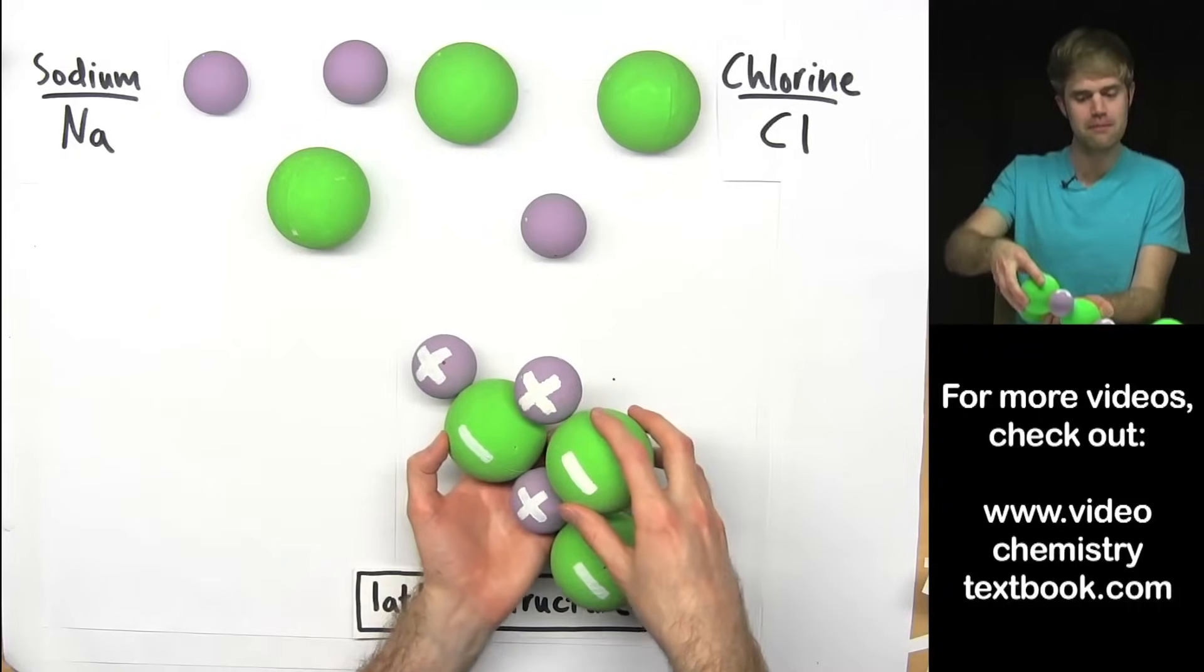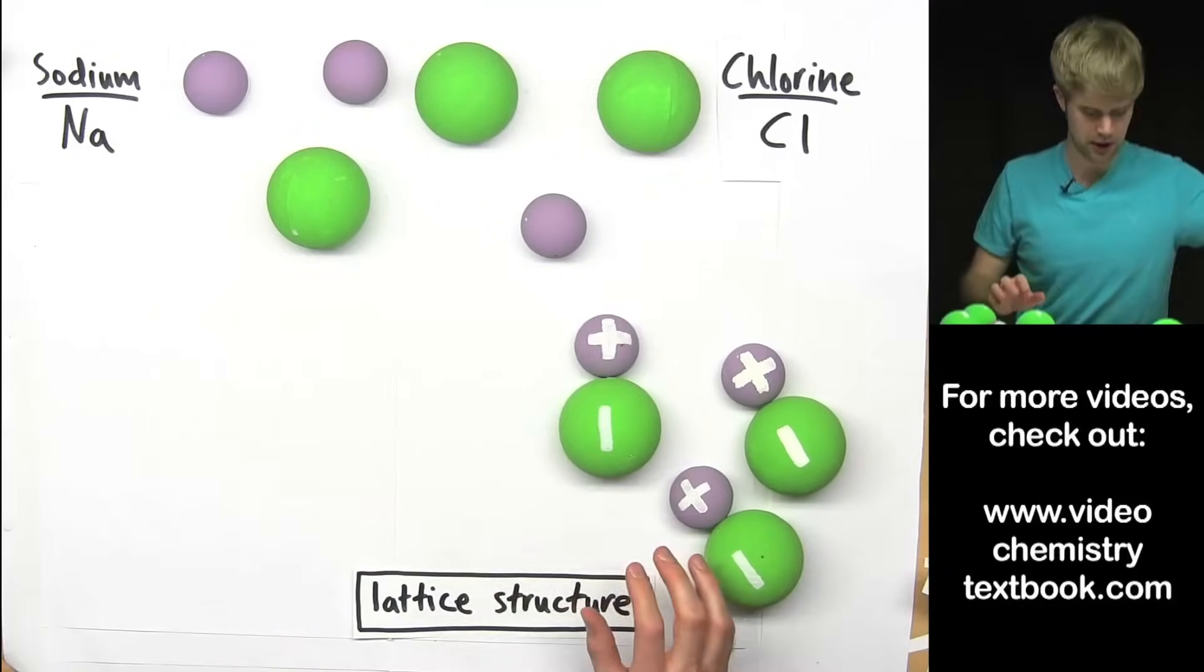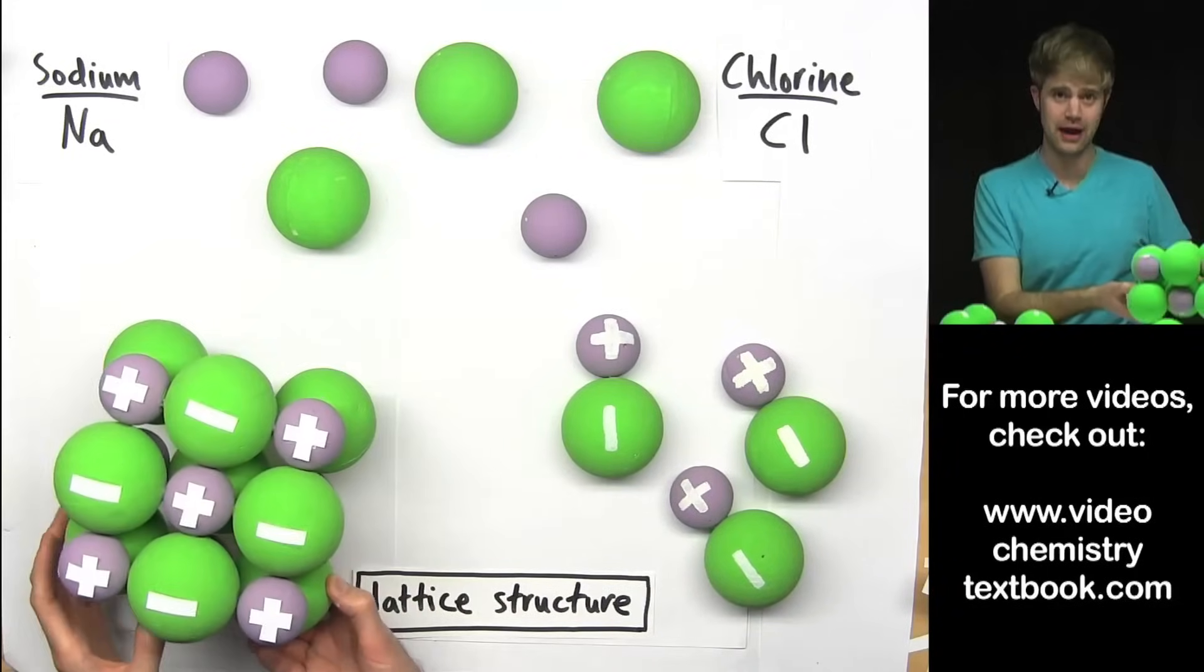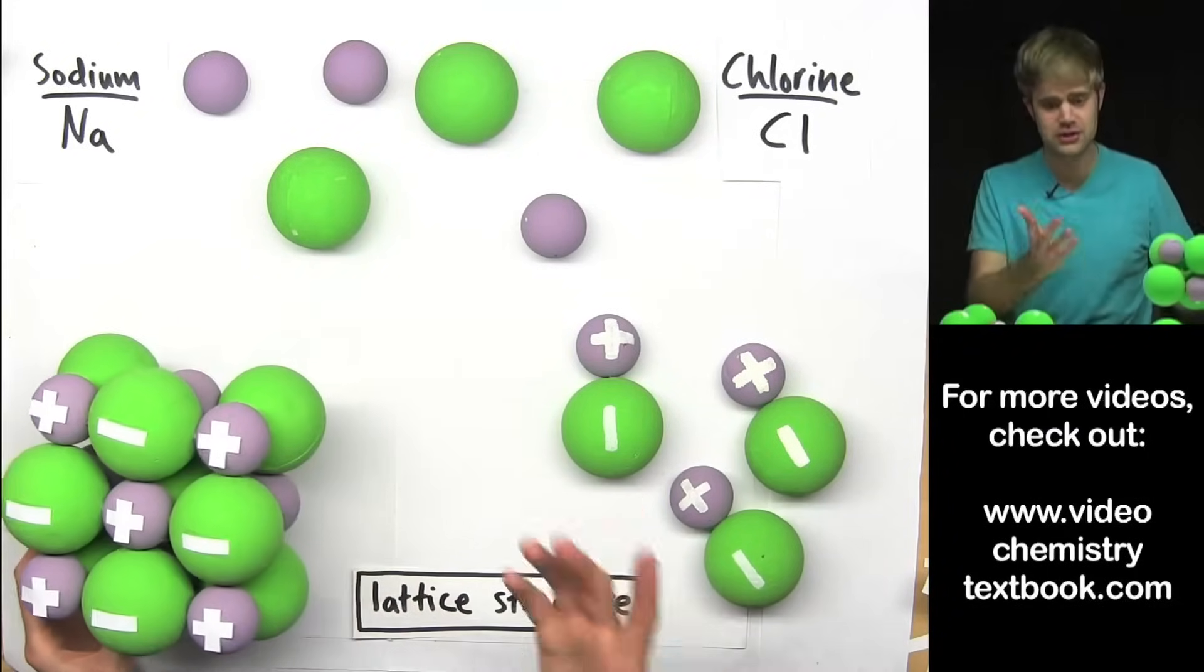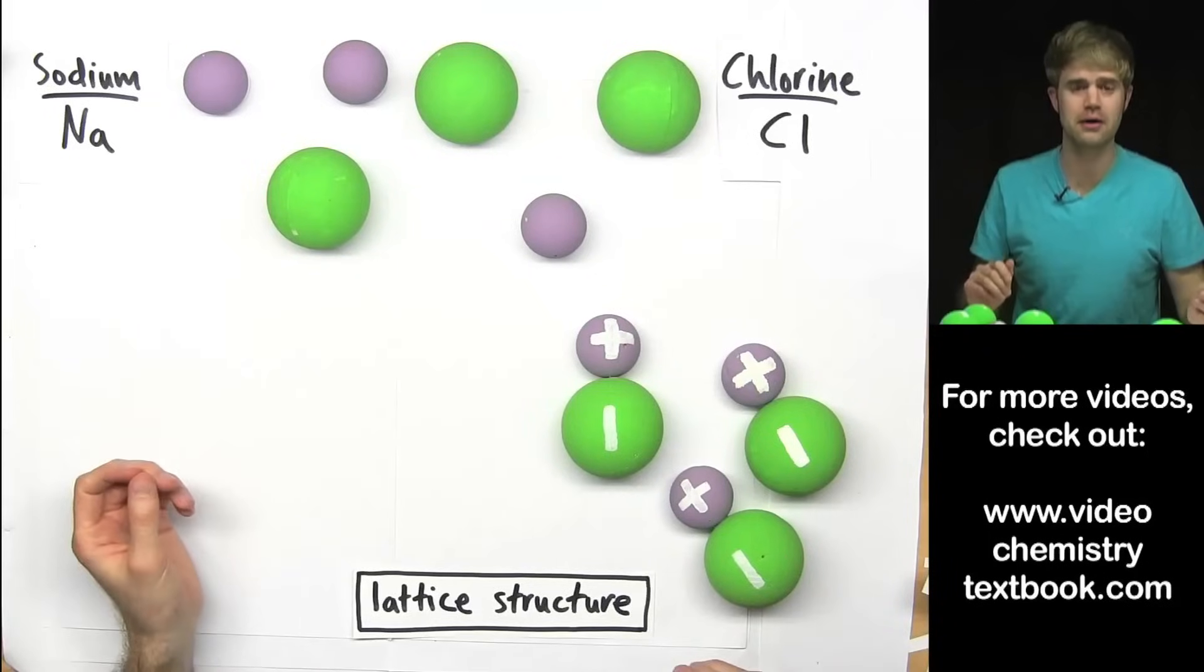But these groups are going to be attracted to each other and they are going to make much bigger structures that are going to become these lattice structures. So that's super important when you're thinking about the structure of ionic compounds.